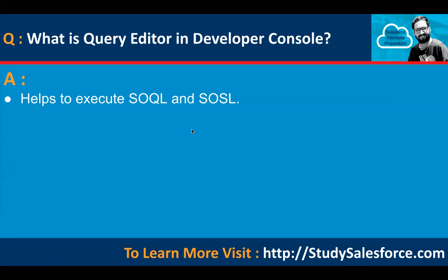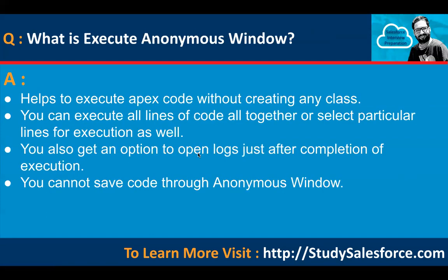What is the query editor in the developer console? It helps to execute SOQL and SOSL. What is the execute anonymous window? It helps to execute Apex code without creating any class. You can execute all lines of code altogether, or select particular lines for execution. You also get an option to open logs just after completion of execution. You cannot save code through the anonymous window.